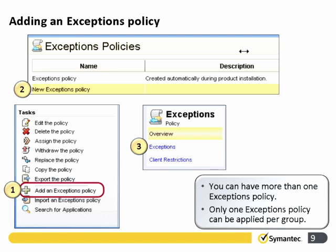To create an exceptions policy we need to go to Add an Exceptions Policy, select the policy to add, and give it a name. We can then go into the exception types on step three and have a look at the overview. It's noted that only one exceptions policy can be applied per group.